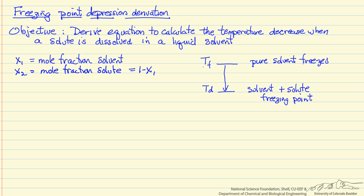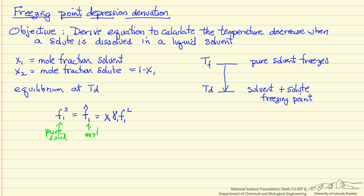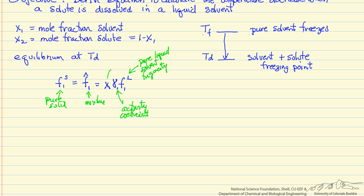We are interested in the equilibrium condition at temperature Td. The equilibrium equation says the fugacity of the pure solid at temperature Td equals the mixture fugacity for component 1 — the solvent — which involves the activity coefficient, the mole fraction x1, and the pure component liquid fugacity at temperature Td. Importantly, the fugacity of the pure liquid does not equal the fugacity of the pure solid at temperature Td.